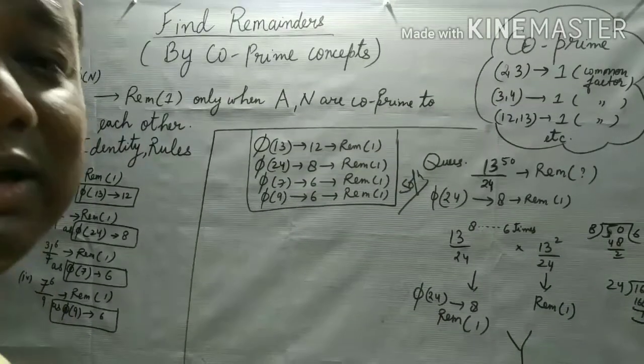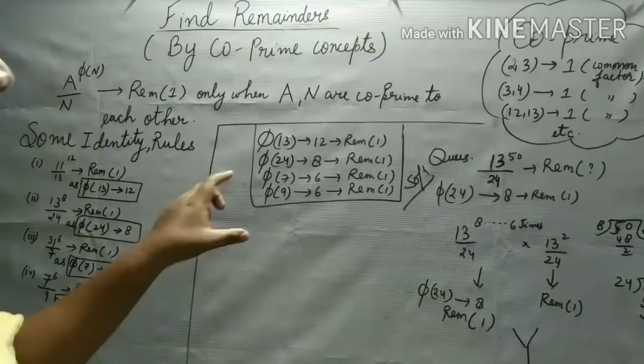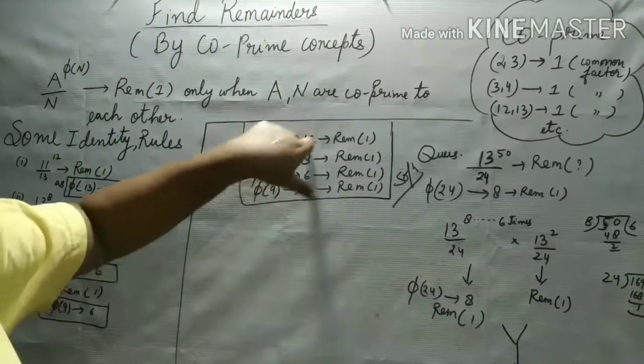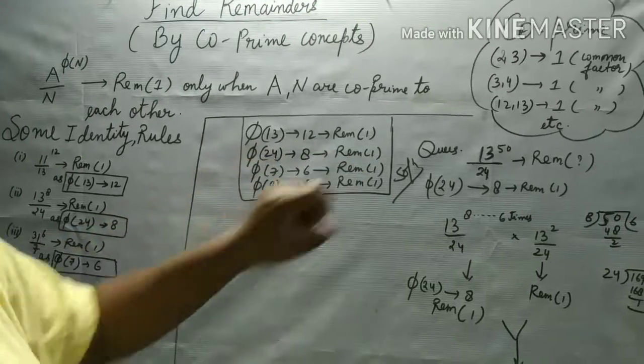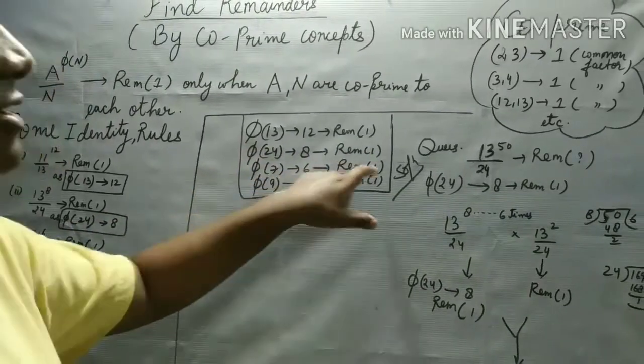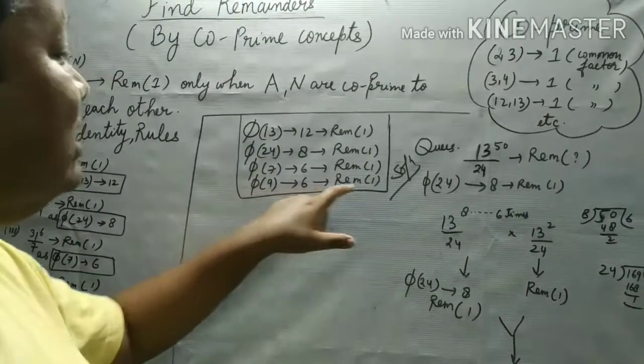So once again, we remind ourselves that if 5 of 13 is to 12, 5 of 8 is 24 to 8, 5 of 7 is to 6, 9 to 6.